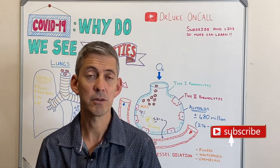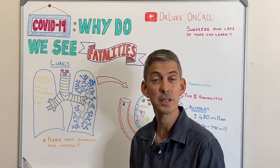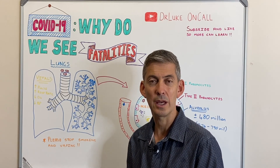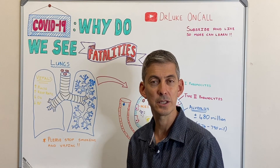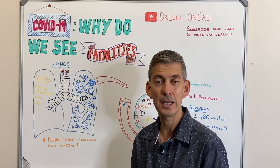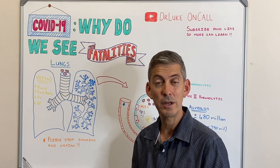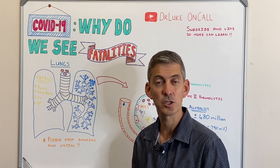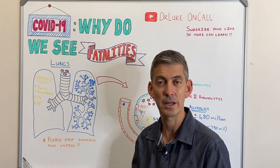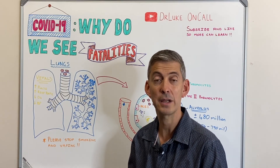The mortality rate across the world varies quite a bit and the average is around two percent, but in countries like Italy we've seen up to 10 percent mortality rate. A couple of factors are really important there. Italy has a very old population — I think they're the second or third oldest in the world — and another big factor is that almost 23 percent of their population smokes. If you've got a smoking history or any sort of lung disease history, this virus is going to cause a lot of problems in your body and specifically in your lungs.